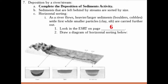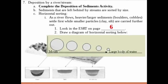Under number two in your notes, draw a diagram of horizontal sorting. Start with a big circle because larger particles get dropped off first, then circles get smaller. The mouth of the river is where it meets a large body of water. The largest particles are deposited at the mouth, and as you move further away, particle size gets smaller and smaller.